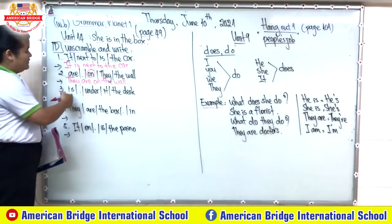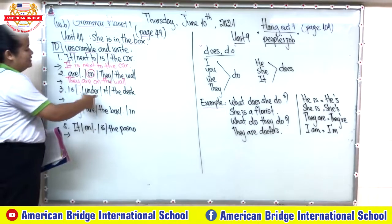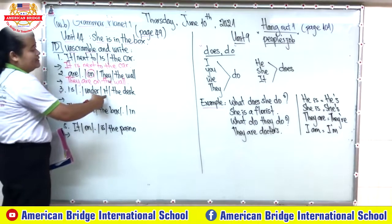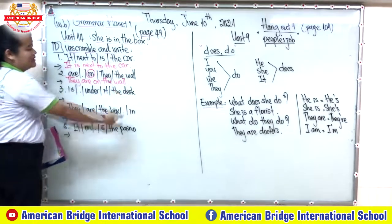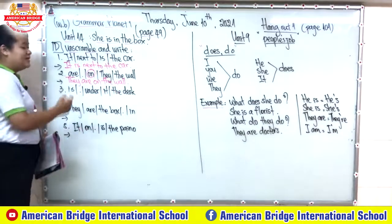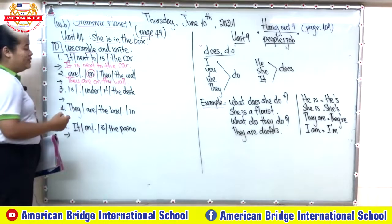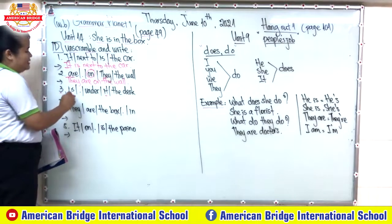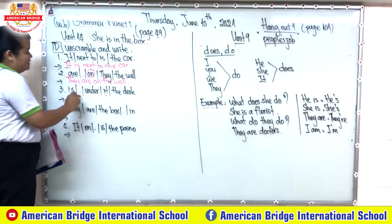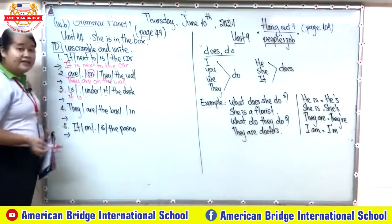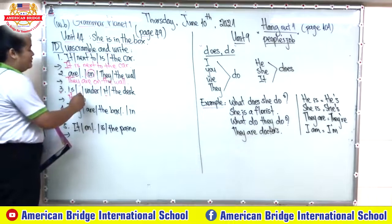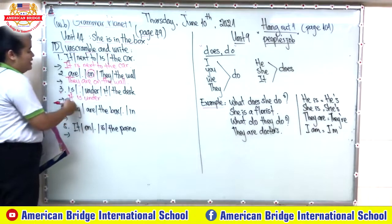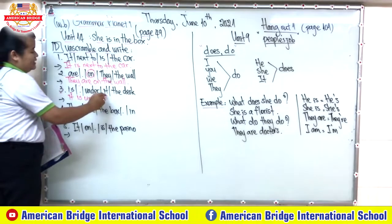Now let's move to number three. We have: 'is and the it the days.' We need to arrange the sentence to the correct one. We put the subject first — 'it' — then the verb 'to be' — 'is' — and then the preposition of place 'under.' So: 'It is under the days.'